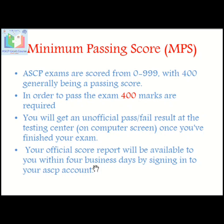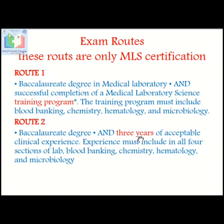To pass the examination, ASCP exams are scored from 0 to 999, with 400 generally being the passing score. You will get an unofficial pass or fail result on the computer screen at the testing center once you have finished your exam. Your official score report will be available within four business days by signing into your ASCP account on the ASCP website.